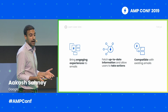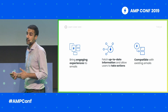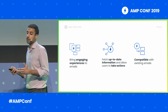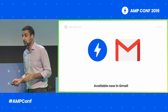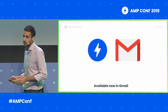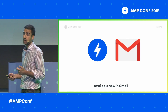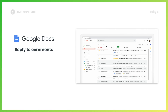AMP for Email can make your emails more interactive with components like AMP Carousel, AMP Accordion, and AMP State that let you build clickable interfaces inside your email. Using AMP List and AMP Bind, you can keep your email messages up to date so that users are always seeing fresh, accurate content when they open the message. A few weeks ago, we announced that AMP for Email is now available in Gmail, so email senders can include this dynamic, up-to-date content powered by AMP in their messages today.